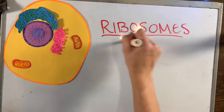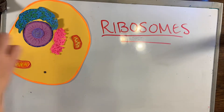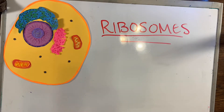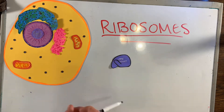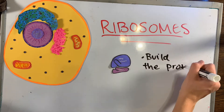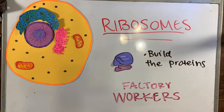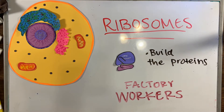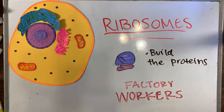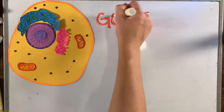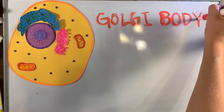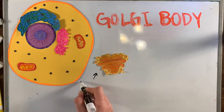Ribosomes can either be found on the rough ER or floating around in the cytosol. They're made up of a small and large subunit, and their job is to build proteins. In a factory, ribosomes would be considered the workers.